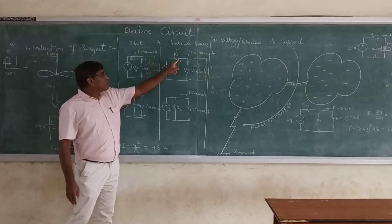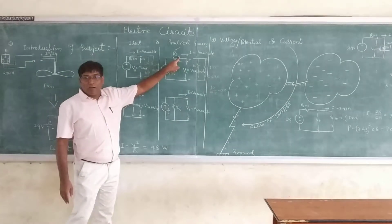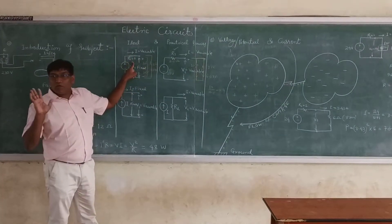The difference is that in a practical voltage source, we have source resistance, while in an ideal voltage source, the source resistance is equal to zero.